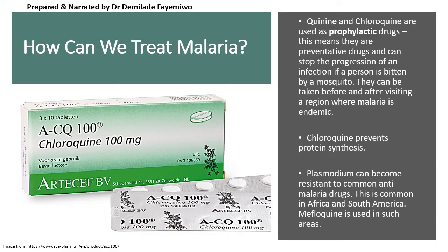How do we treat malaria? If you lived through the COVID-19 pandemic, you'll have heard of chloroquine. Chloroquine is a prophylactic drug that prevents and stops the progression of a malaria infection when a person is bitten by a mosquito. It is usually taken before and after leaving a region where malaria is endemic. Chloroquine works by preventing the development of the parasite by inhibiting its protein synthesis. However, in some regions chloroquine has been abused — it is available over the counter without a prescription — and as a result, mosquitoes have become resistant to it.